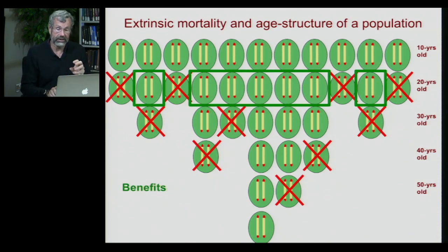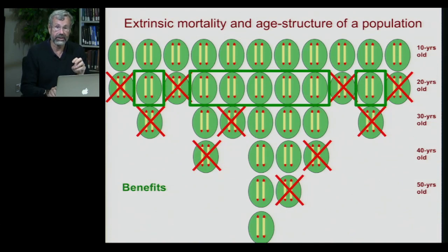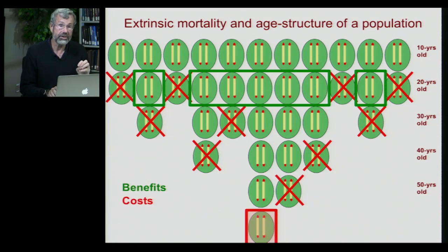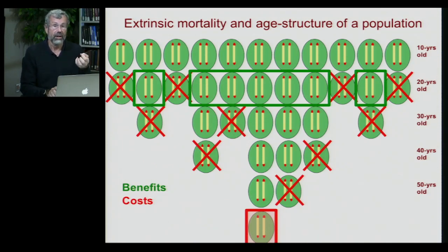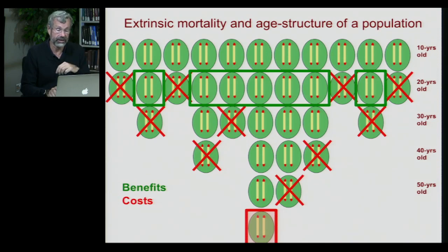If we have a trait like testosterone that enhances male reproduction in his 20s, there are a lot of individuals that will benefit from that in the population. And if the costs of testosterone are not really felt until men are in their 60s, very few will pay those costs. So many more of the population will receive the benefits than will suffer from the costs.